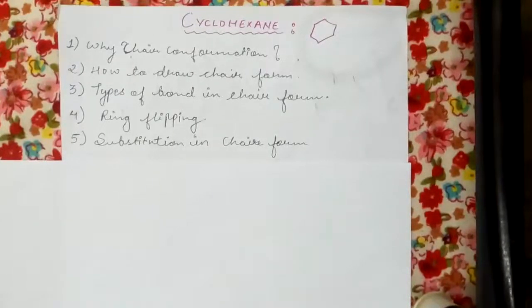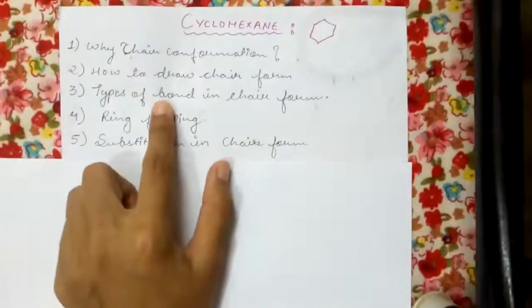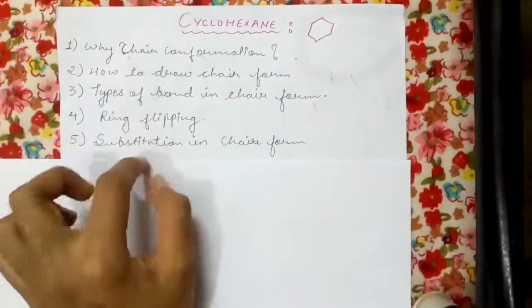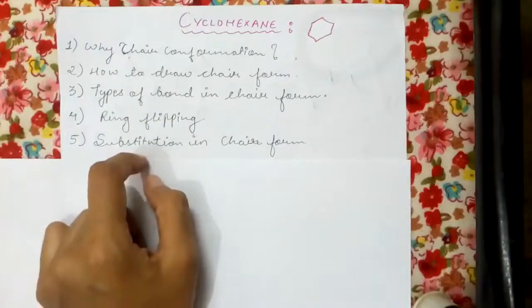Hello everyone, in this video we will be dealing with cyclohexane. First, we will see about the chair conformation - why cyclohexane exists in chair conformation and how to draw chair form. We will also study the types of bonds in chair form, ring flipping, and substitution in chair form.